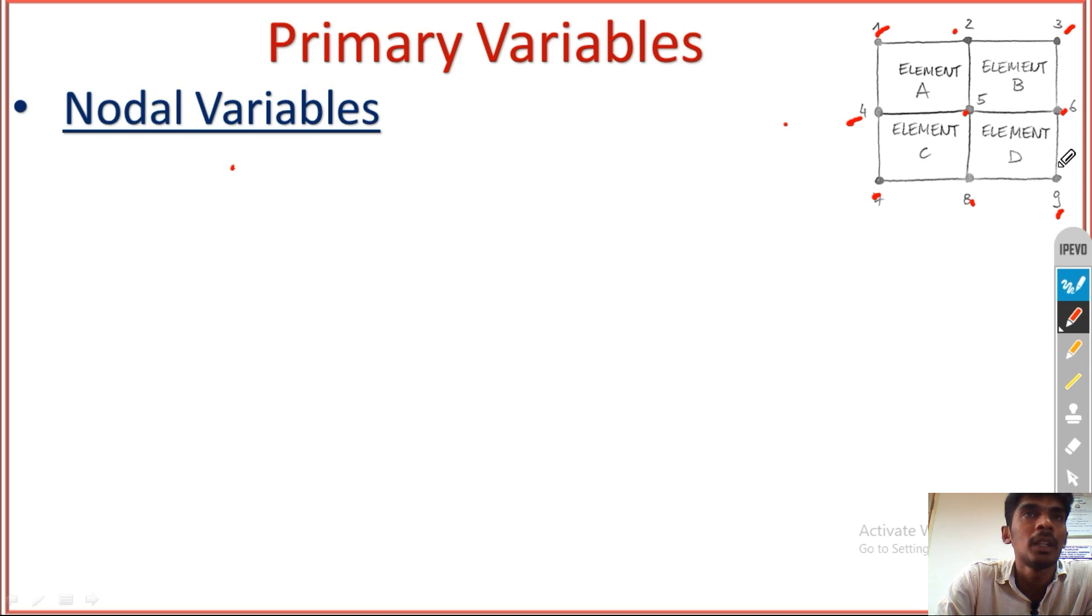1, 2, 3 up to 9. So primary variables always indicate the nodal variables. This is the very important key point here.